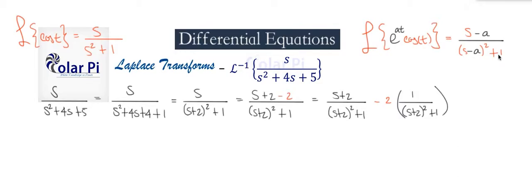Knowing that, we see that this here is S minus a equals S minus negative 2. So a is negative 2. Therefore, what we have in the first quotient is e to the minus 2t times cosine t.